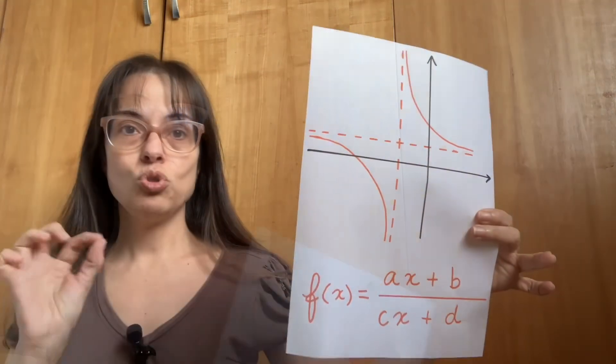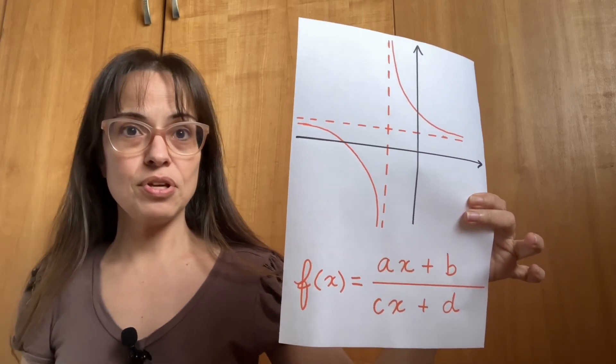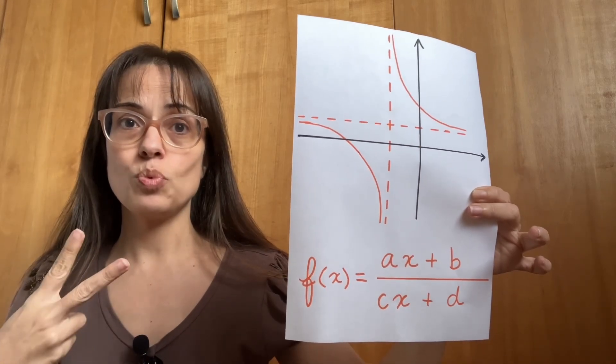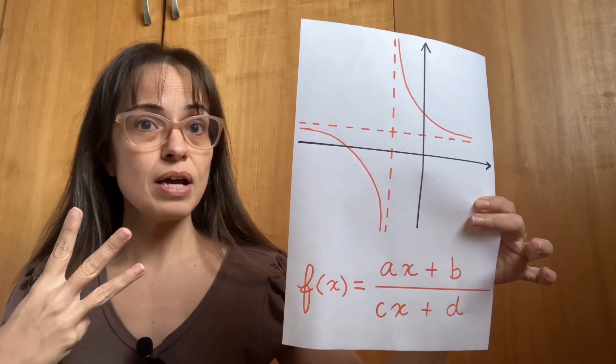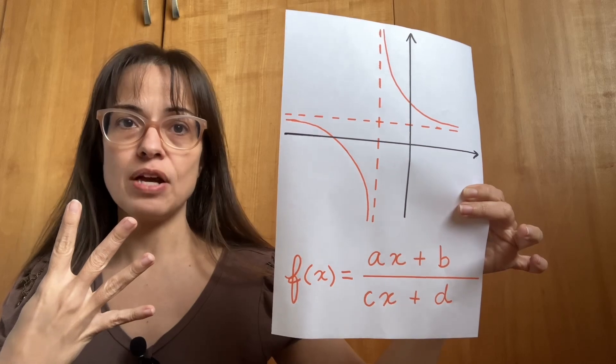If you are the friend who knows the topic, here are the things you should tell your friend that will actually help. Do not say formulas — wait for them to say the formulas themselves. Here's what you have to say: the y-intercept is f(0); the x-intercept is when f(x) = 0; the vertical asymptote is the value of x that would break the 'no dividing by zero' rule; and the horizontal asymptote is what happens when x is very large.